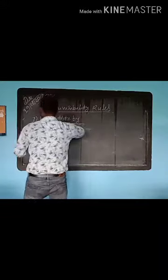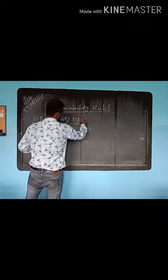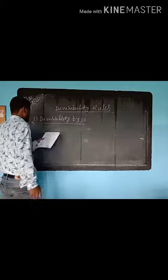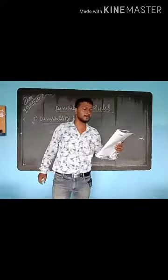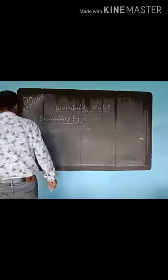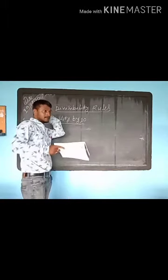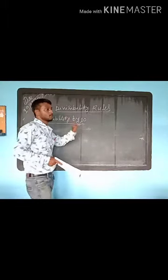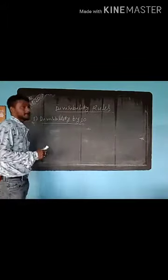Next, divisible by 10. Divisible by 10 is very simple. If there is 0 at the ones place, then the number is divisible by 10. A number must have 0 in the ones place, then it will be divisible by 10. Otherwise not.